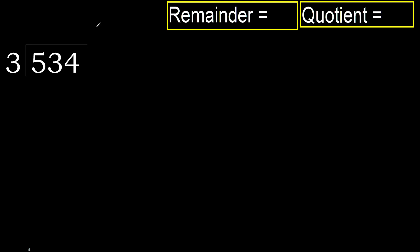534 divided by 3. 5 is not less, therefore with 5 and 3, multiply by which number is nearest to 5 but not greater. 3 multiply by 2 is 6 — 6 is greater. Multiply by 1: 3 multiply by 1 is 3. It is not greater.